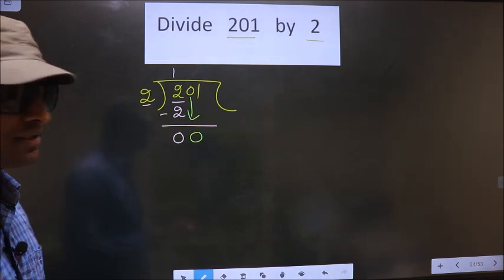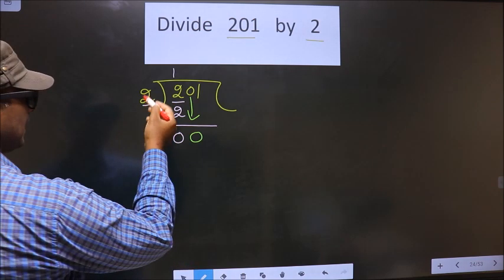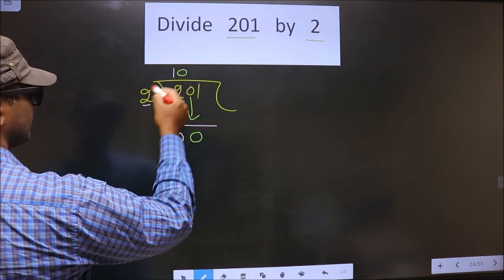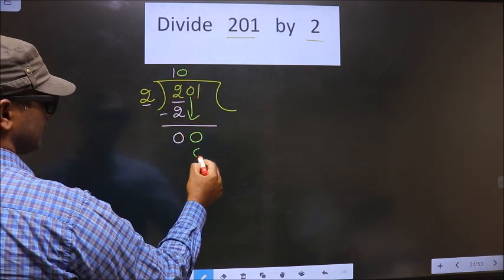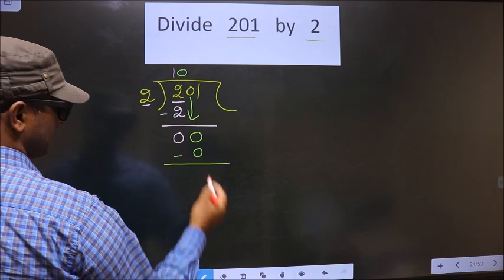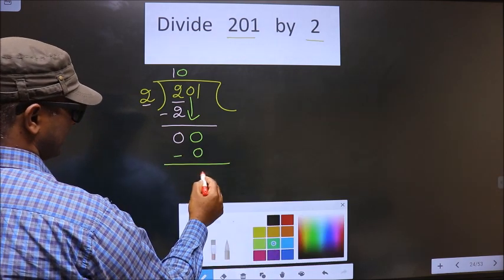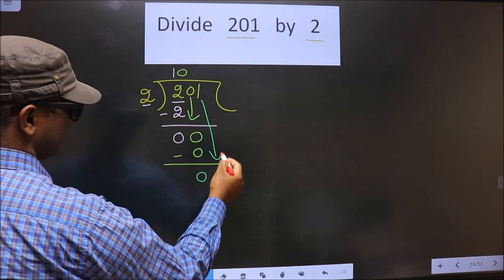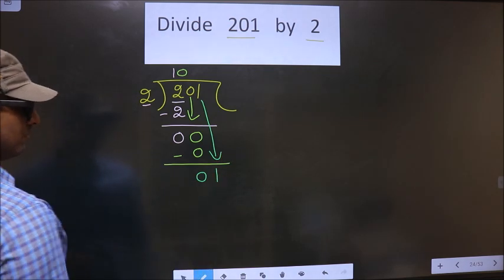So, instead what we should do is, we should multiply this by 0. So, 2 into 0 is 0. So, now you subtract, you get 0. Now, you can bring this number down. Here, 1.